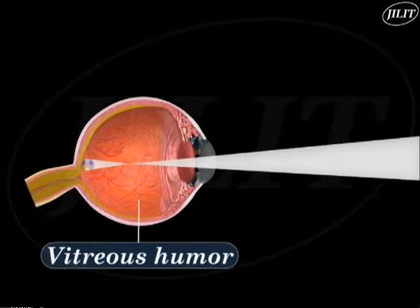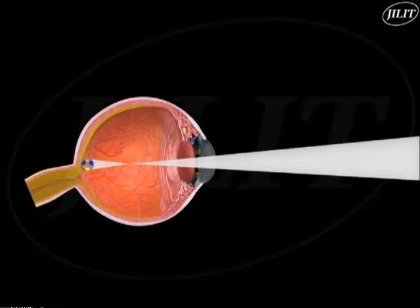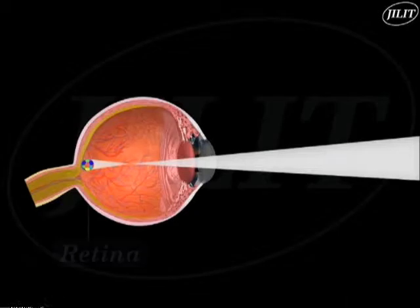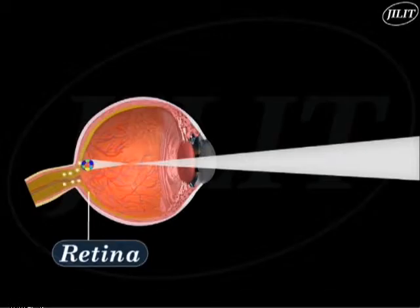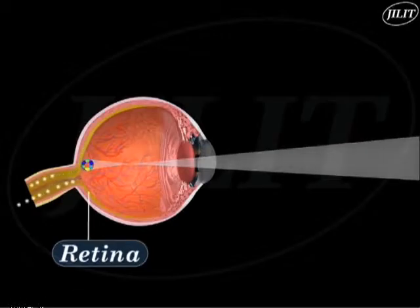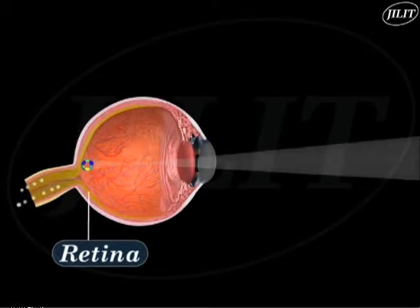The light wave gets focused, thus allowing an image formation on the retina. The photoreceptors on the retina sense the light impulses and change them into electrical signals.